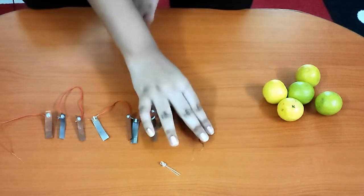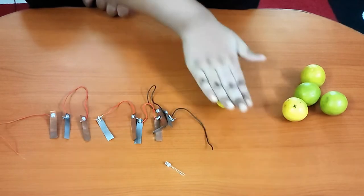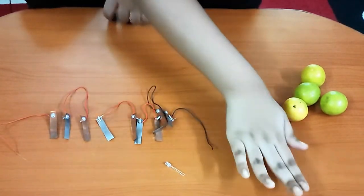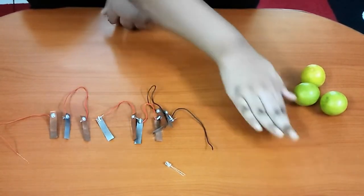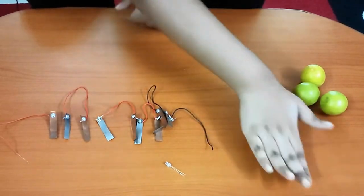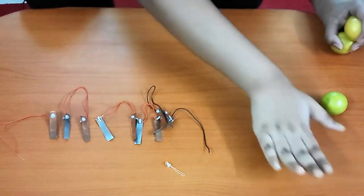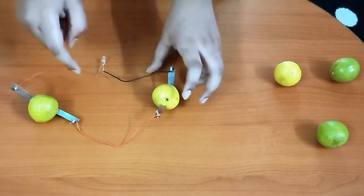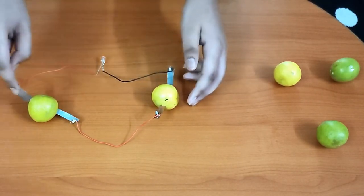We will roll the lemons so that the juice comes out. We have put two slits in the lemons and we have connected the copper and zinc plates like this.